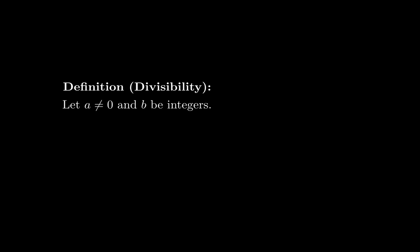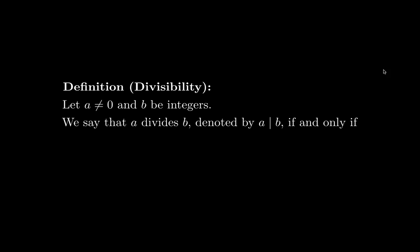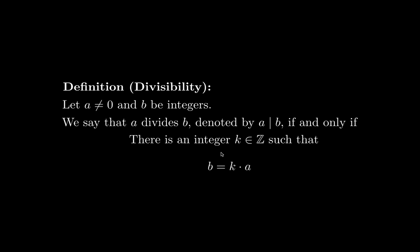Before going into the criterions for divisibility, let's check the definition again. Suppose you have two integers a and b, with a not equal to zero. We say that a divides b, using this notation, if and only if there is an integer k such that b equals k times a. So b is a multiple of a. We can rewrite this by dividing both sides by a, giving b over a equals k.